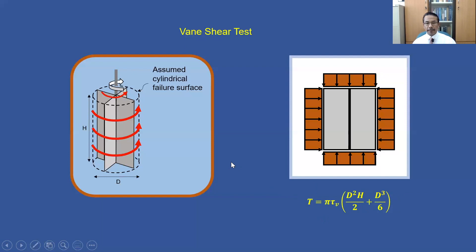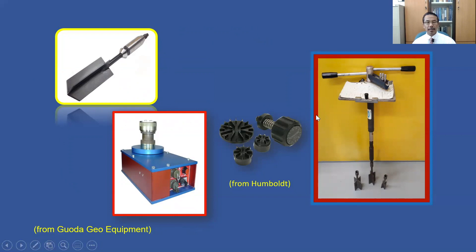Take note that this test can only be performed in soft cohesive soil. It cannot be performed in granular material like sand or gravel due to the interlocking between the large soil particles. In soft cohesive soil like clay or silt, the soil particles are fine or very small, so a smooth cylindrical failure surface can be formed.